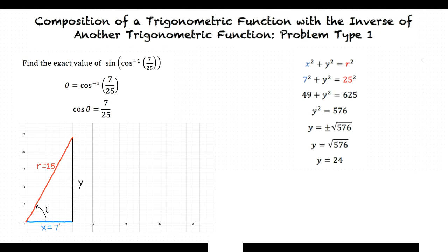Since theta equals the inverse cosine of 7 divided by 25, the equation can be written as sine of theta. By definition of trigonometric functions, sine theta is equal to opposite over hypotenuse, or y divided by r. Substitute in y and r, and we get 24 divided by 25.